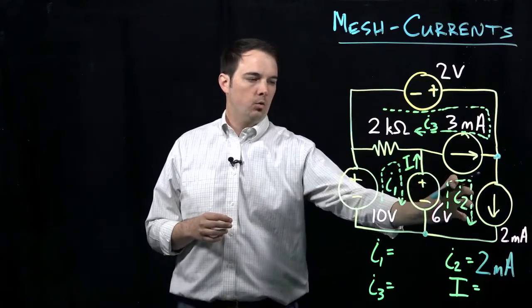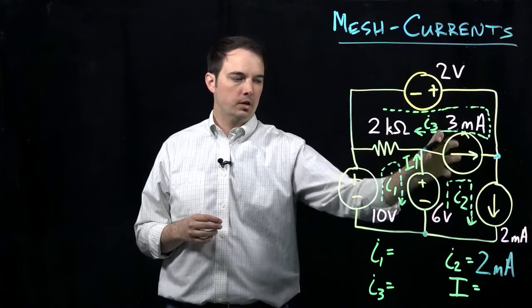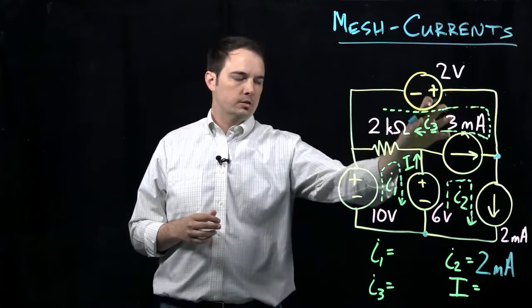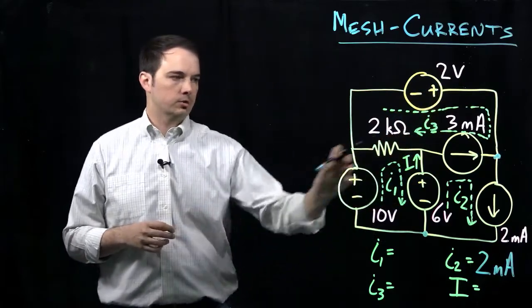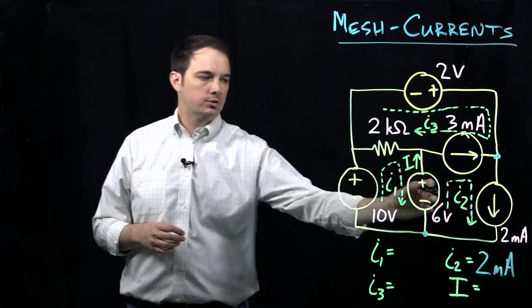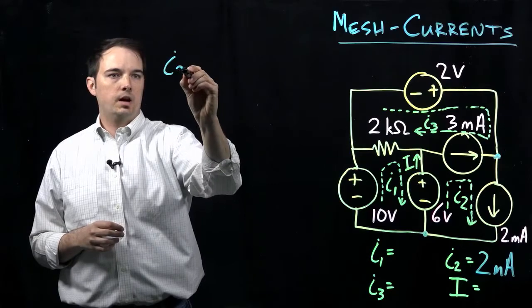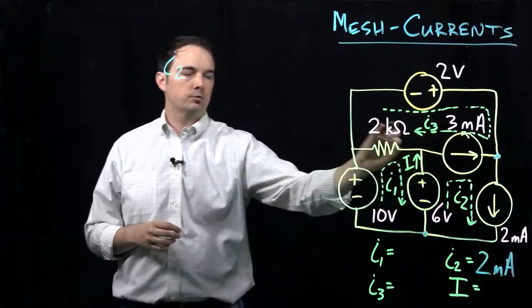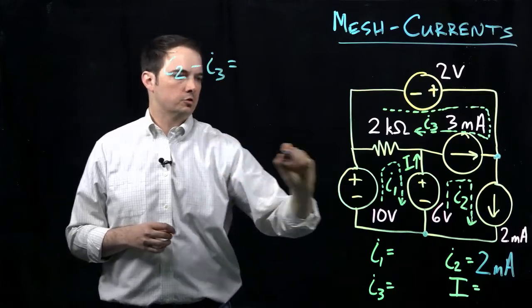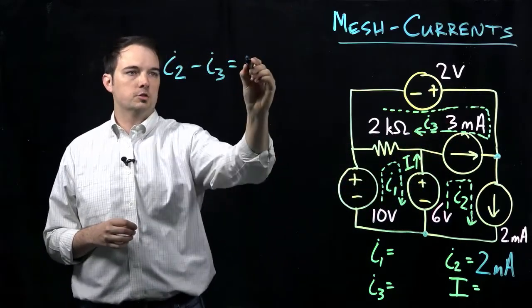Now that we know what I2 is, and we know we have this current source that relates I2 and I3, we can come up with a simple expression. I2 is traveling in the same direction as that current source, so we can say I2 minus I3, which is traveling in the opposite direction. The difference of those two mesh currents would have to equal this 3 milliamp source.